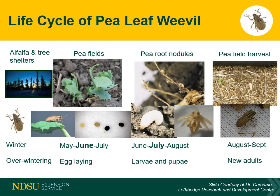Mature larvae pupate in the soil. The pupae stage is a non-feeding developmental stage without plant damage. The new generation of adults emerges during late July and into August, searching out pulse or related forage crops and feeding on vegetation before seeking overwintering sites in the fall.